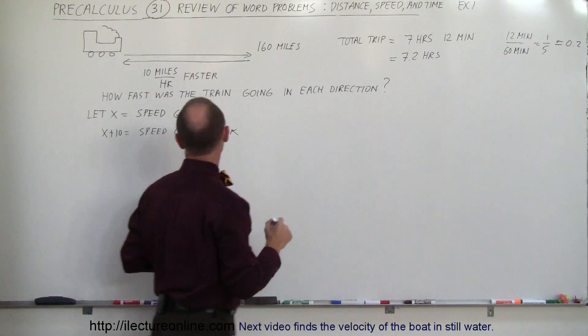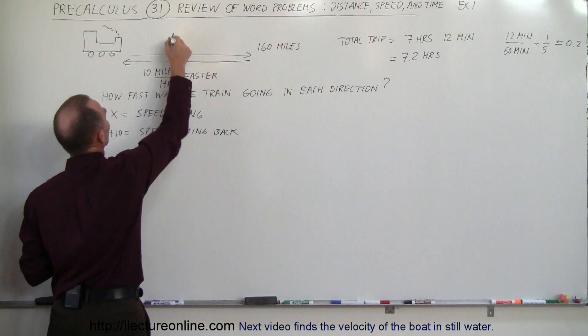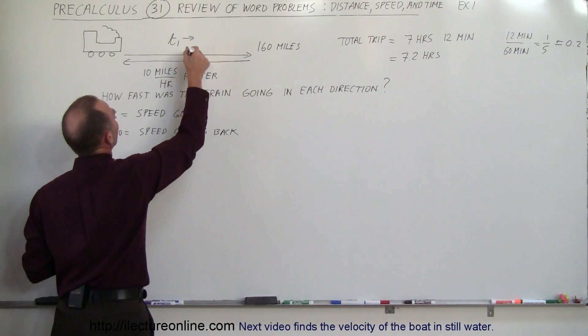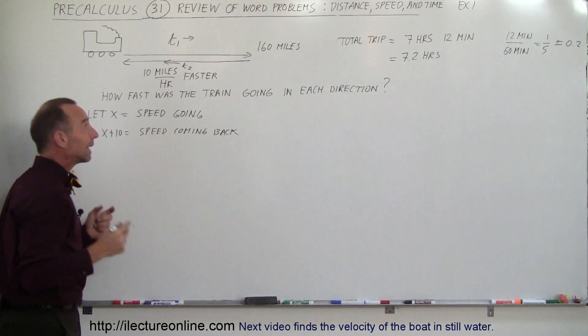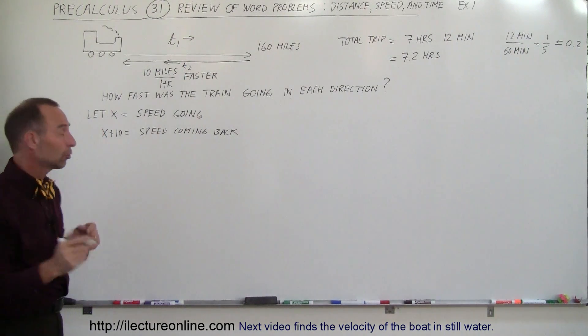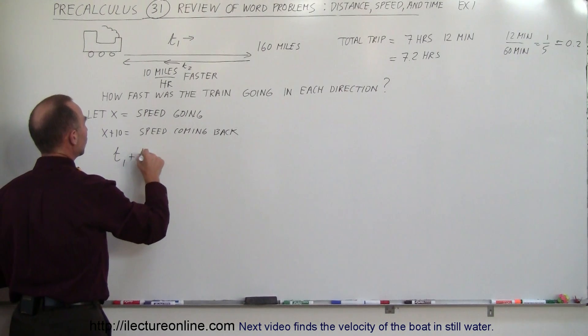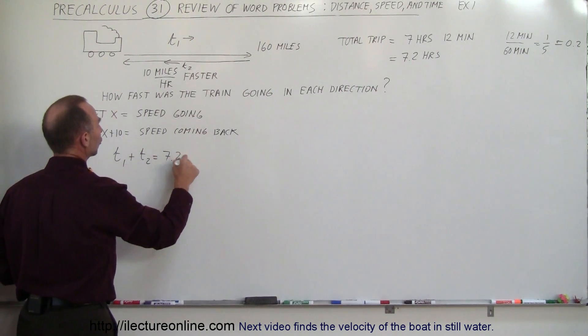What we can also say is that the time going, call that T1, and the time coming back, which is T2, they add together to 7.2 hours. So we can say that T1 plus T2 equals 7.2.